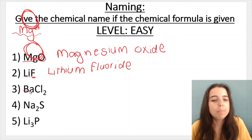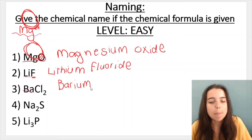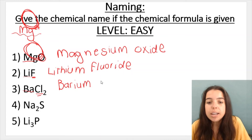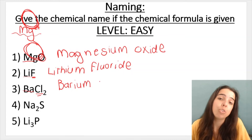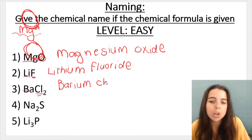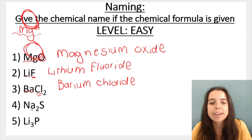Number three: Ba. Ba is barium — if you did not know, it's one of those you need to study. Ba is barium. And now we've got Cl. Cl is chlorine, but when it bonds and forms an ion, it becomes chloride.